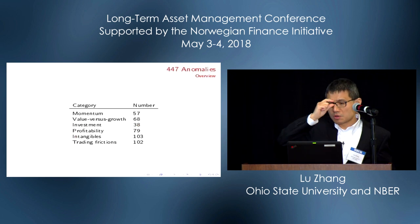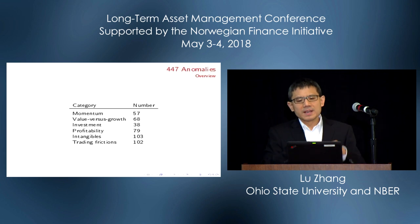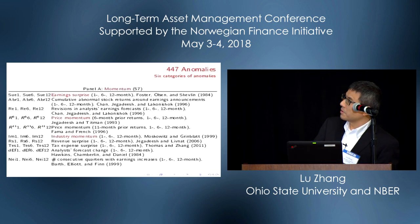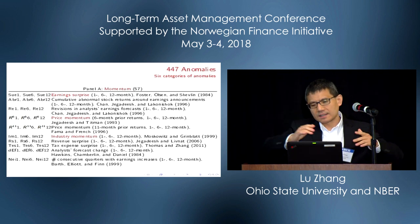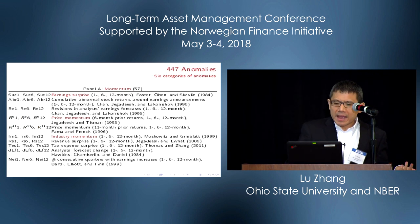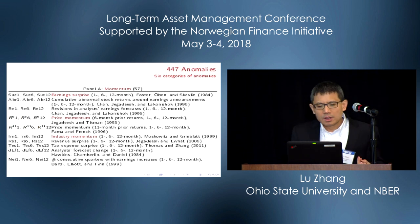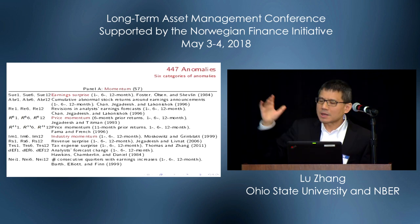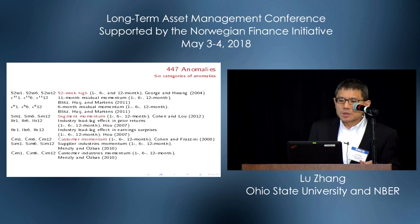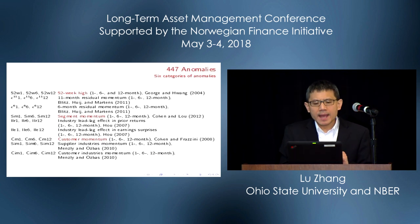We have 447 anomalies grouped into six categories: momentum, value, investment, profitability, intangibles, and trading frictions. The momentum category has 57 variables, including the classic earnings-price, price momentum, and industry momentum, as well as more obscure ones like a 1984 Financial Analysts Journal article using analyst forecast changes — a very powerful predictor, much more powerful than earnings-price. We also include newer momentum variables such as 52-week high, segment momentum, customer momentum, and supply-chain industry momentum.